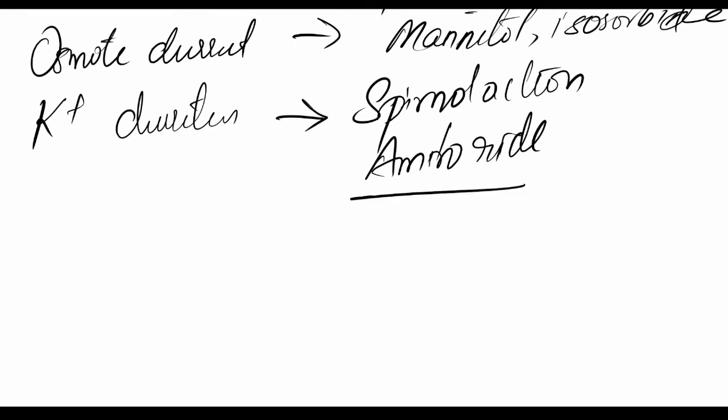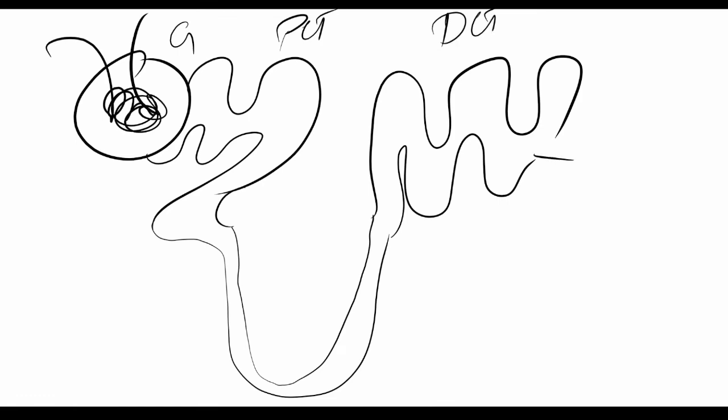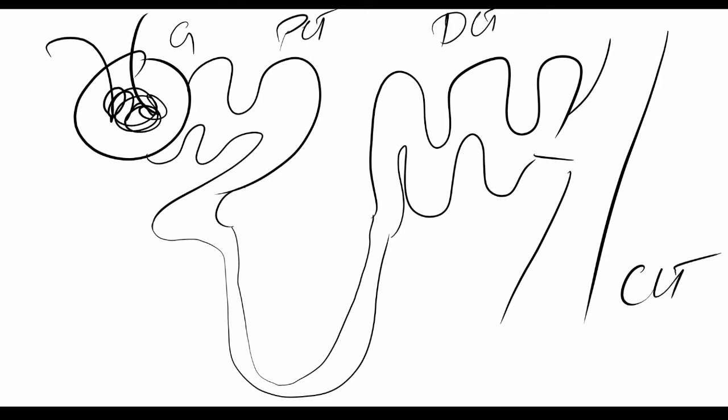Now coming to the normal functioning of the nephron — let's draw the nephron. This is the glomerulus, then we have the proximal convoluted tubule, which is the PCT. Then there is the loop of Henle, and then the distal convoluted tubule, which is the DCT, and finally the collecting duct. Let's understand the functioning. In the glomerulus, filtration depends upon blood pressure and the volume of blood present.